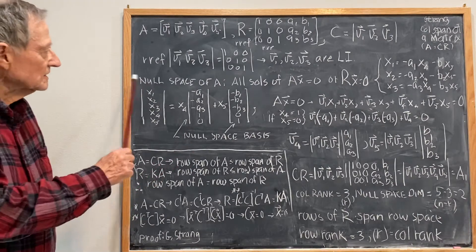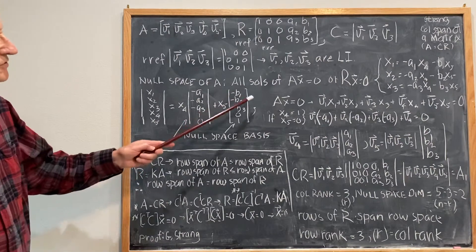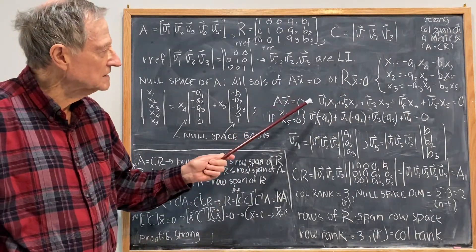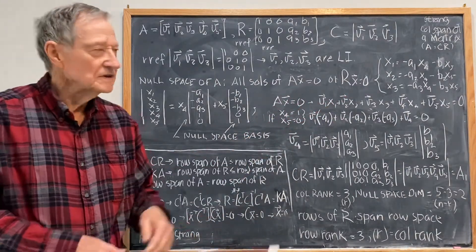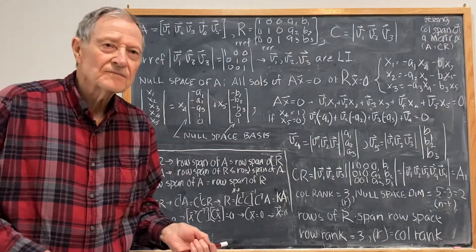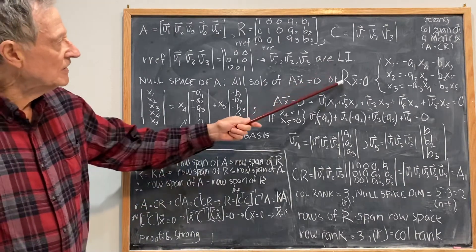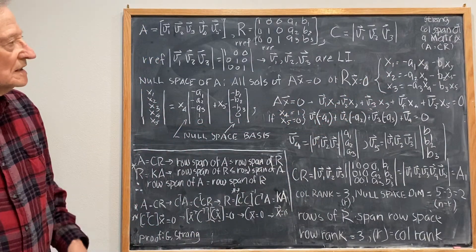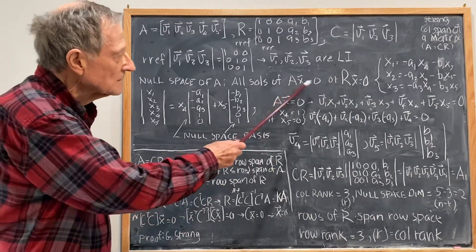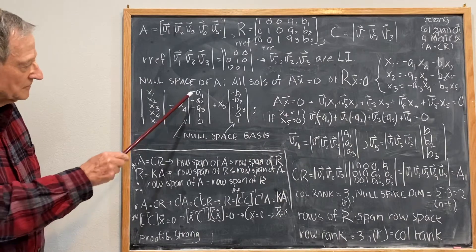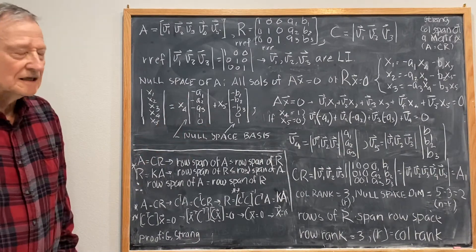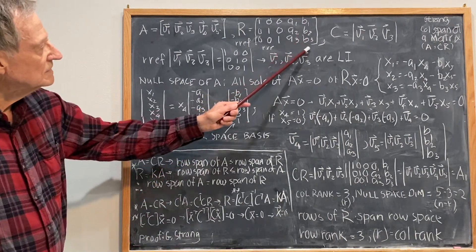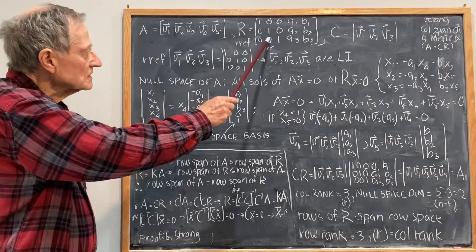Next, I would like to look at the null space of A. The null space of A is all solutions of AX equals 0, or equivalently RX equals 0, because the solutions to AX equals 0 and RX equals 0 are the same — the process of getting the reduced row echelon form doesn't change those solutions. Solving RX equals 0, I get X1, X2, X3 as given, where X4 and X5 are the free variables and X1, X2, X3 are the pivot variables.